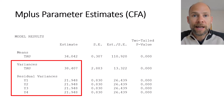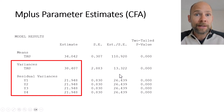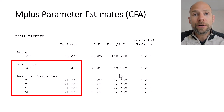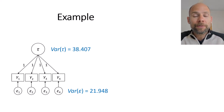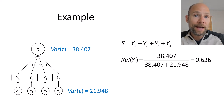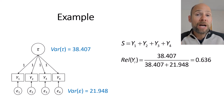You can see that the error variance estimate is exactly 21.948 for each subtest with the same standard error of 0.83, confirming those parameters were constrained to be equal. This model has only three free parameters: the true score mean, the true score variance, and the common error variance component. Using these variance components, the reliability of each subtest is calculated as 38.407 divided by (38.407 plus 21.948), which gives 0.636.